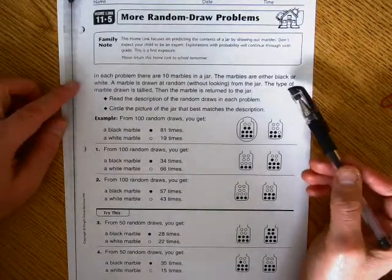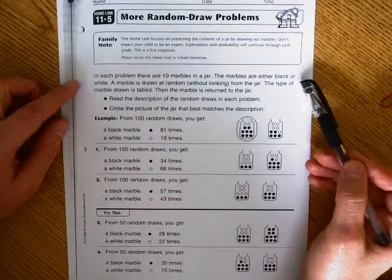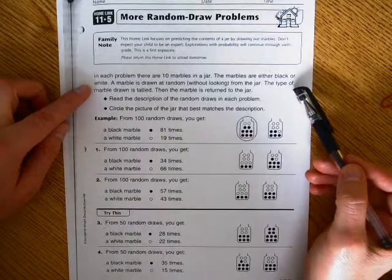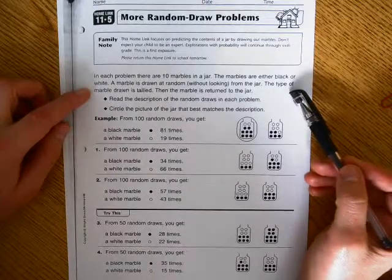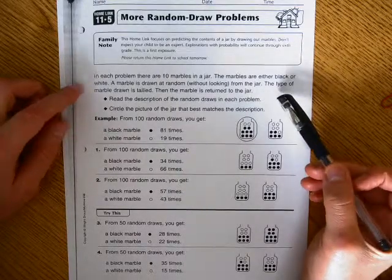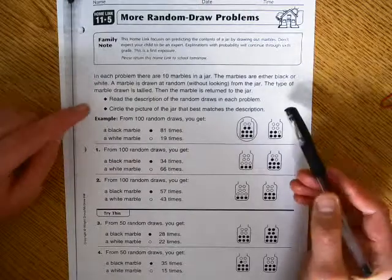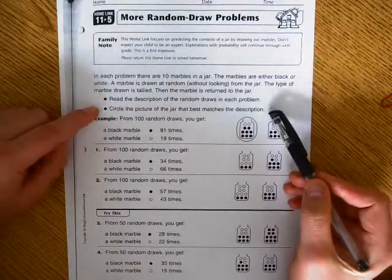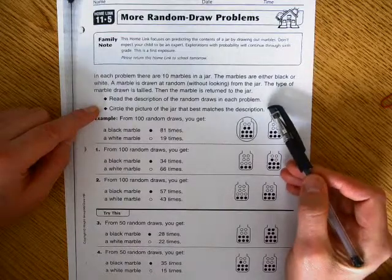In each problem there are 10 marbles in a jar. The marbles are either black or white. A marble is drawn at random, without looking, from the jar. The type of marble drawn is tallied. Then the marble is returned to the jar. Read the description of the random draws in each problem. Circle the picture of the jar that best matches the description.